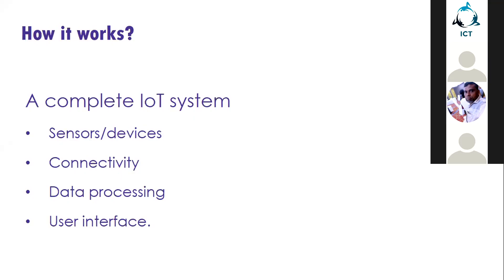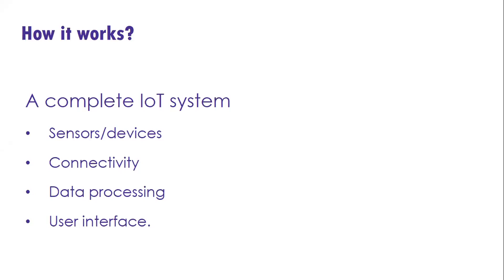We can break down a complete IoT system into four things. The first is the sensor or device — the device or sensor we use to get information from the environment. The second is connectivity — how we move the collected data to a central place so we can process it. Then comes data processing, and finally the user interface, where the user gets the information from what we collect.